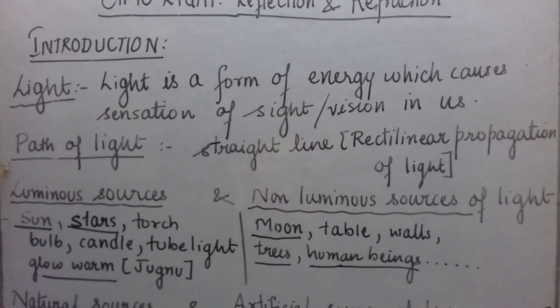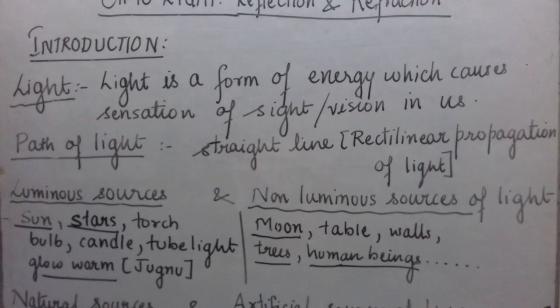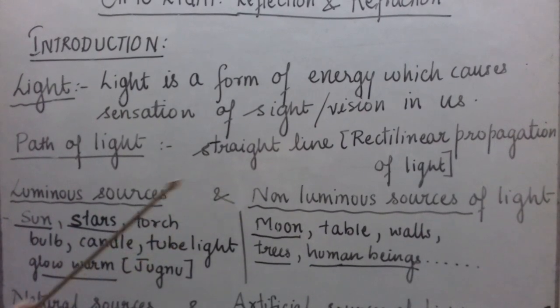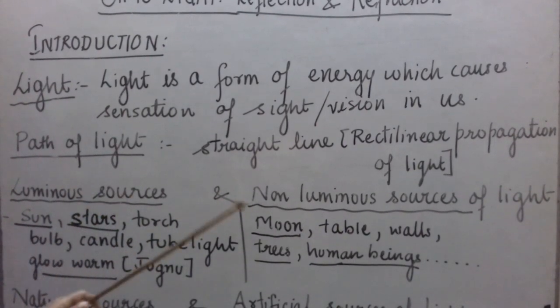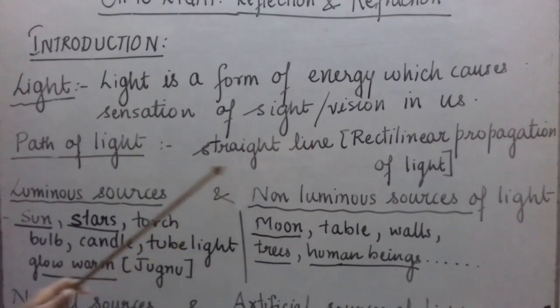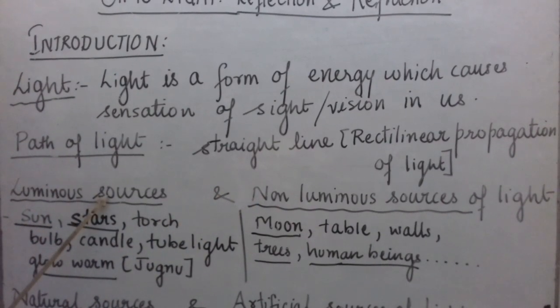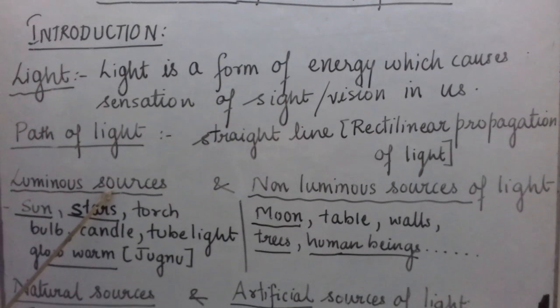Now, we can divide all the sources of light into two categories: luminous sources of light and non-luminous sources of light. Luminous sources of light are the sources which emit their own light.